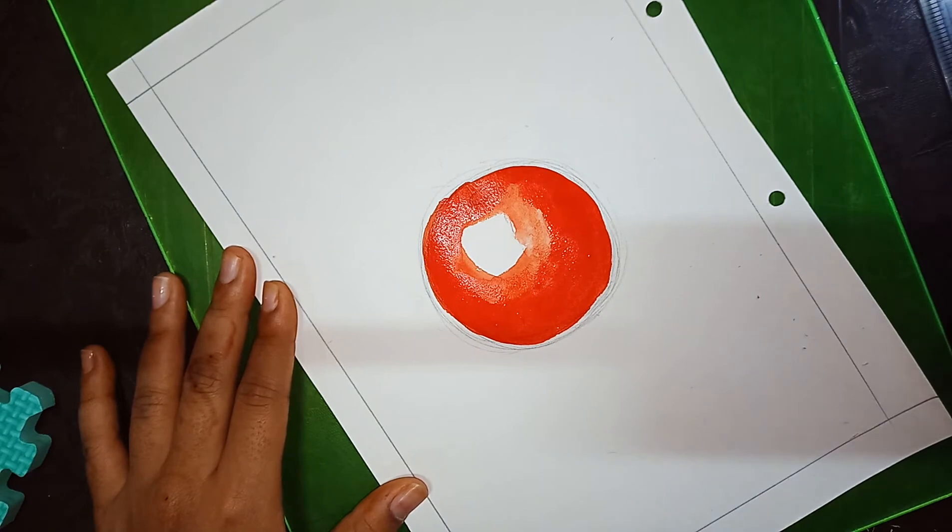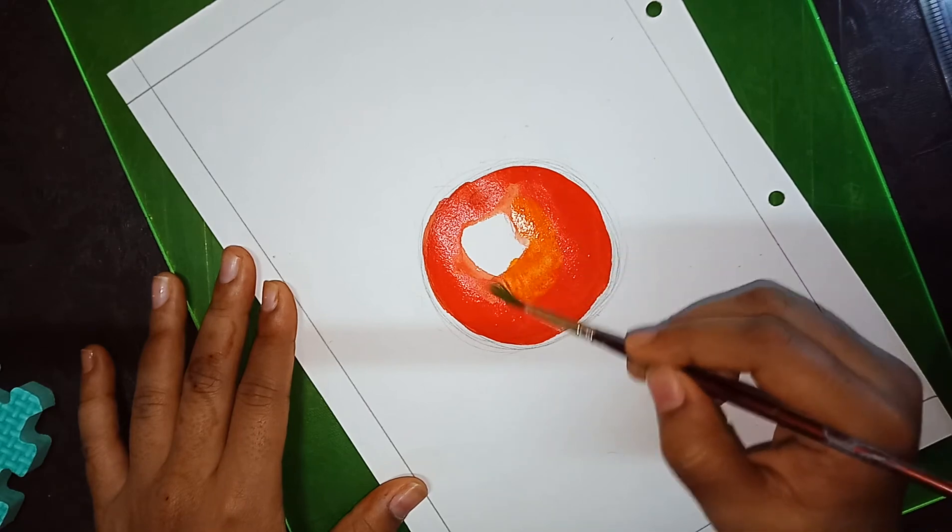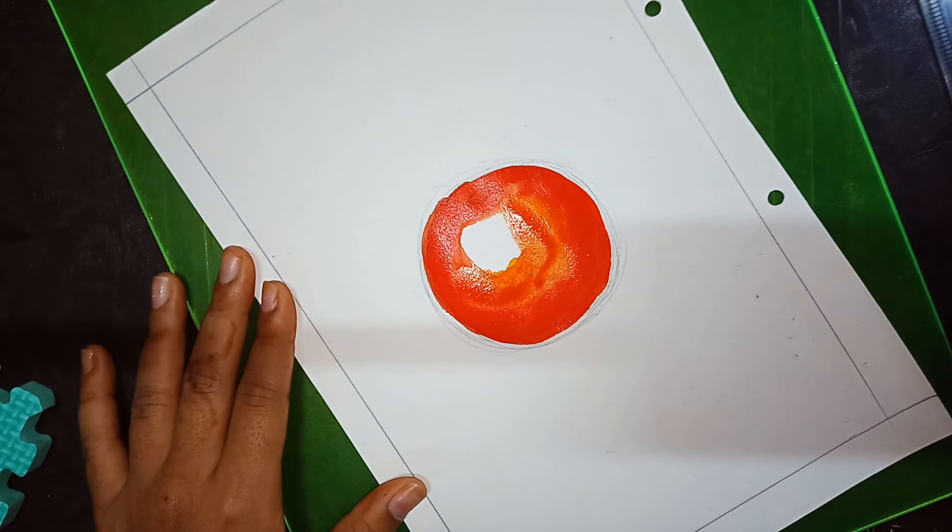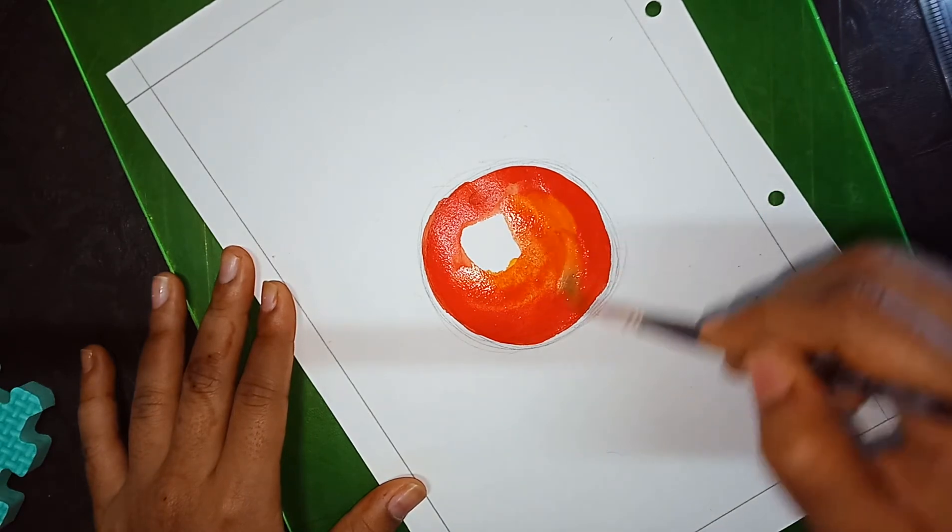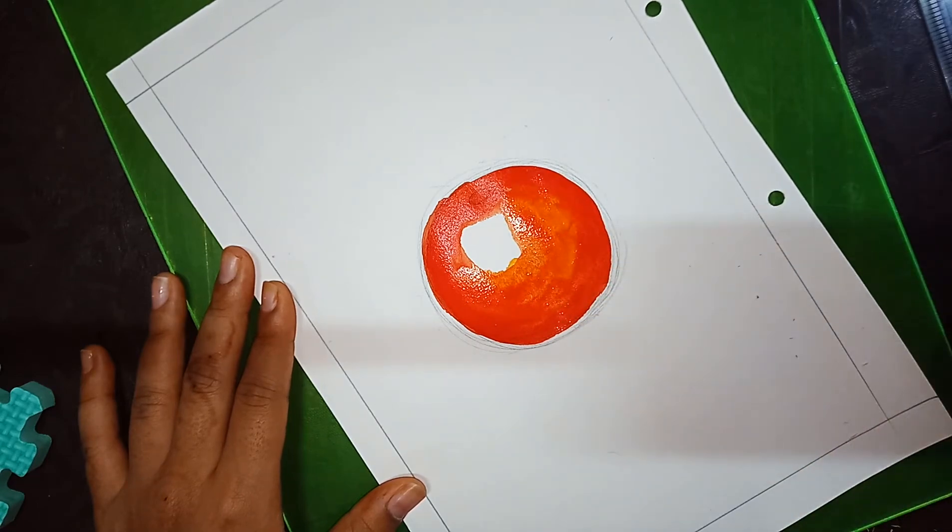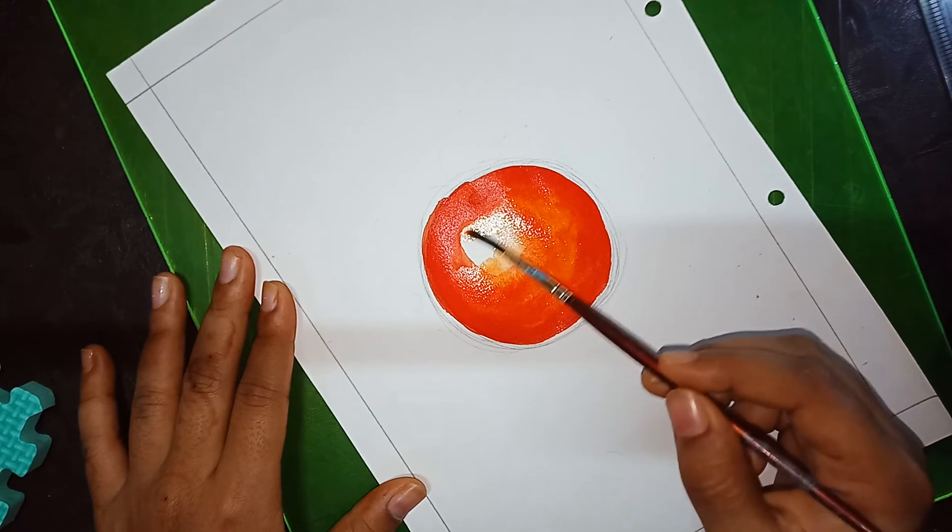Now after completing the mix of orange and red color, we are going to give a yellow color. In between, we are adding yellow color, and then we are adding water with the yellow color.